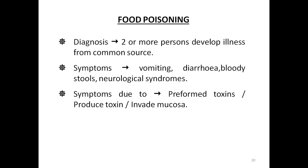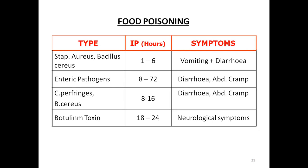Food poisoning has many MCQs. Symptoms include vomiting, diarrhea, bloody stools, and history of eating outside. It is mostly due to preformed toxin or bacteria producing toxin in the mucosa. You must remember the incubation periods: Staphylococcus aureus and Bacillus cereus have incubation periods of 1-6 hours, while botulism toxin has an incubation period of 18-24 hours.